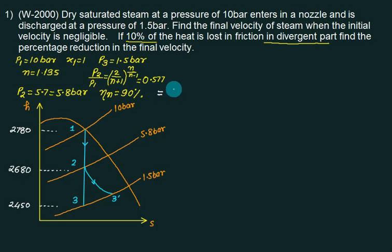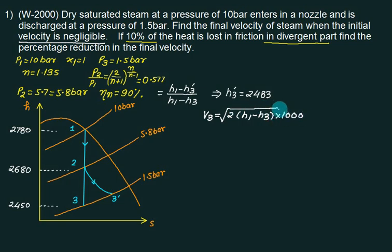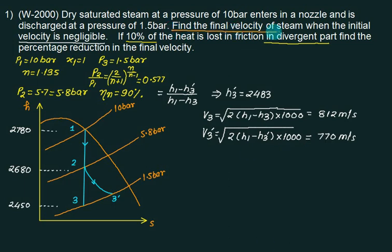Nozzle efficiency equals to H1 minus H3 dash upon H1 minus H3. Confirm in the problem that the inlet velocity is negligible. Inlet velocity is negligible. What is V3? For ideal case, you have to compare two values. One with the ideal, one with the friction. Under root 2 times H1 minus H3. So this one is answer 1.